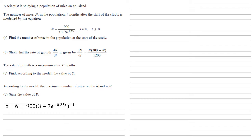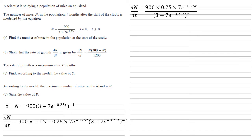We then use repeated applications of the chain rule. We've got 900 at the beginning. The minus 1 from the power of the bracket will come to the front, as will the minus 0.25 from the power of e and the 7e to the minus 0.25t itself. They all come out to the front, leaving the original bracket at the end with the power lowered by 1 to give minus 2. Tidying this up and putting it back into a fraction, we get 900 times 0.25 times 7e to the minus 0.25t on the top — note the two negatives have cancelled — and 3 plus 7e to the minus 0.25t all squared on the bottom.